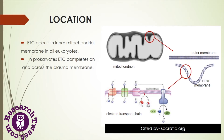The electron transport chain is located in the mitochondria, specifically in the inner mitochondrial membrane, which forms folds or ridges known as cristae. In prokaryotes, where mitochondria are not found, the electron transport chain takes place on and across the plasma membrane, which acts like the inner membrane of mitochondria.